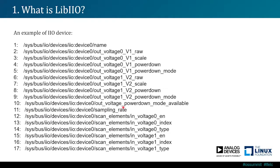Going forward to line 11, we can see another attribute called 'sampling_rate'. It has no voltage or out prefix, which means it's an attribute of the IIO device, while 'power_down', for instance, was an attribute of the voltage channel. 'Name' is again, like 'sampling_rate', an attribute of IIO device 0.